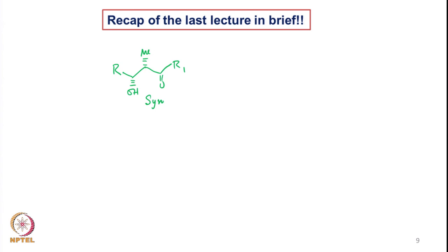We also saw how the Z enolate can give high selectivity in terms of syn-aldol. We took all four cases and saw how a large ratio of the syn-aldol is likely to form when we start with the Z enolate. Then we looked at the various features needed for obtaining the Z enolate, and we saw that the formation of the Z enolate is much better and much easier, and also the formation of the corresponding syn-aldol from Z enolate is also very easy.